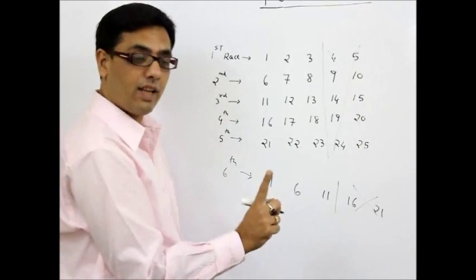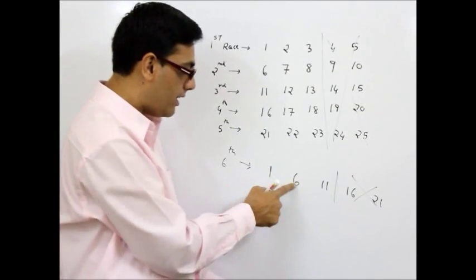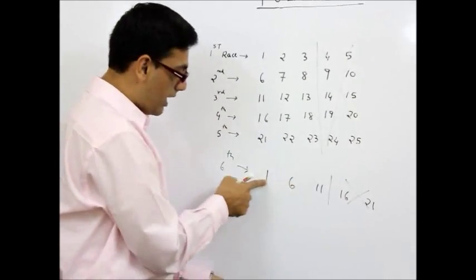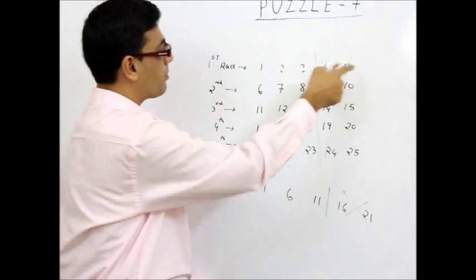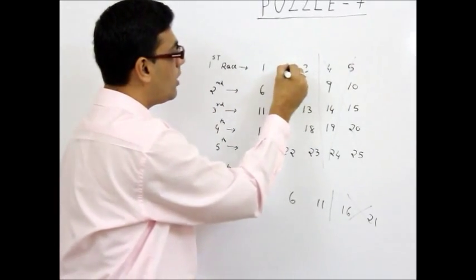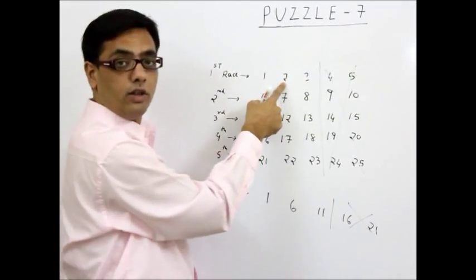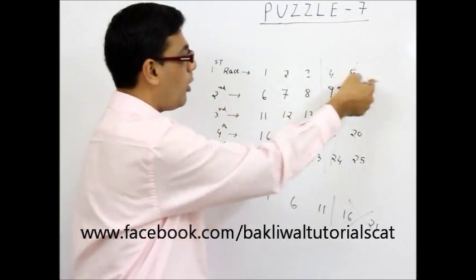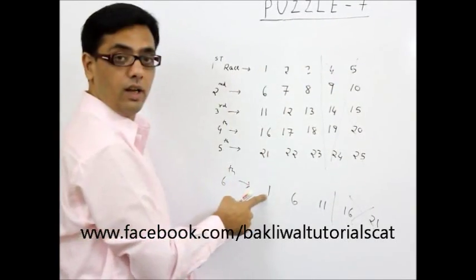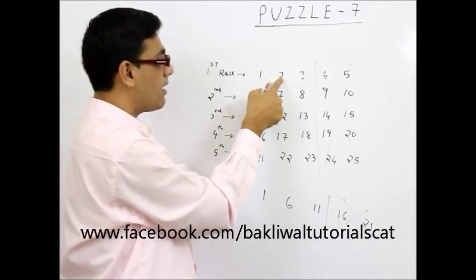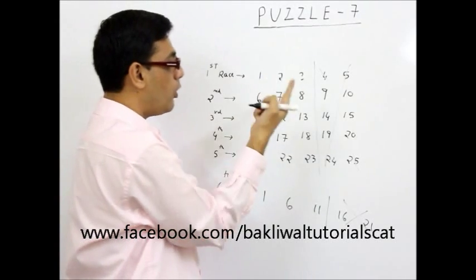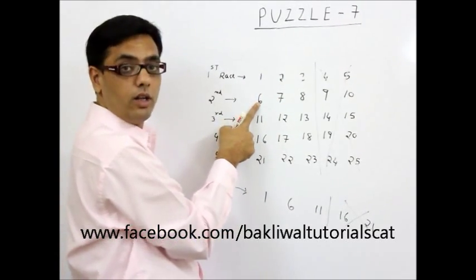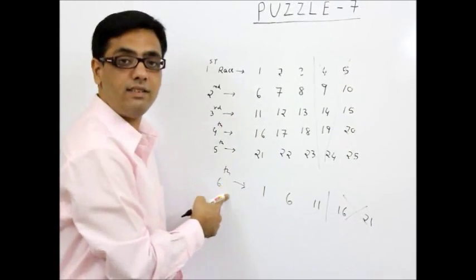But my dear friends, I can't be sure that this is my second horse. Why? If you look at it carefully, in the first group, horse number 2 can also be the second horse. For all you know, this is the group of death. All top horses are in the first group because this is the topper here. This horse has just come runners up to the topper. So we don't know whether this horse is better than horse number 6 or not. And therefore, 6 races is not the answer.